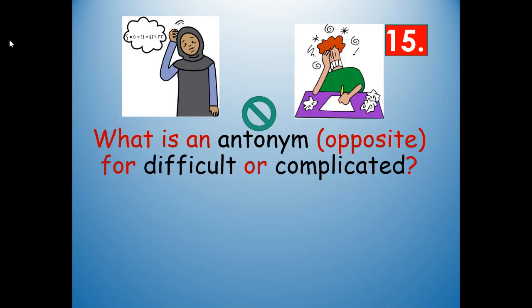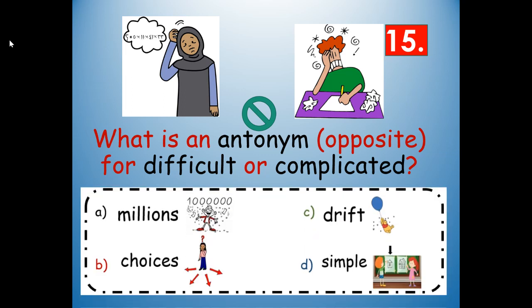Number 15: what is an antonym — the opposite — for difficult and complicated? Would it be millions, choices, drift, or simple? The opposite of difficult and complicated is simple, or easy. Simple — S-I-M-P-L-E.